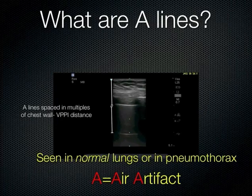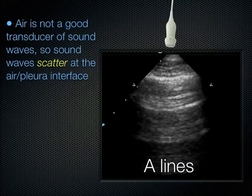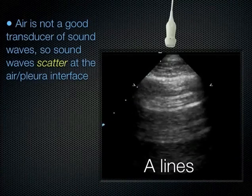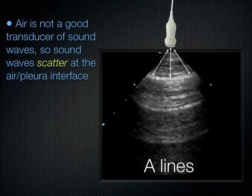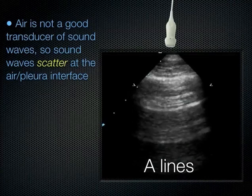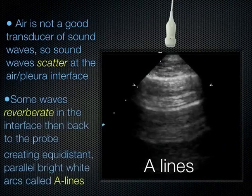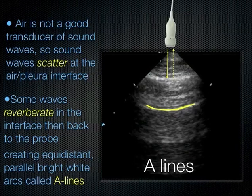As a reminder: air is not a good transducer for sound. The sound reaches the pleural line and most of it scatters back. The sound waves that do return in an organized fashion create an image — that's the pleural line. However, some waves get stuck in the pleural line, reverberate, and reach the probe later, which the probe interprets as lines lower down. It's just an artifact — your lungs are not striped. This occurs because the difference between the air and the pleural line creates this artifact.